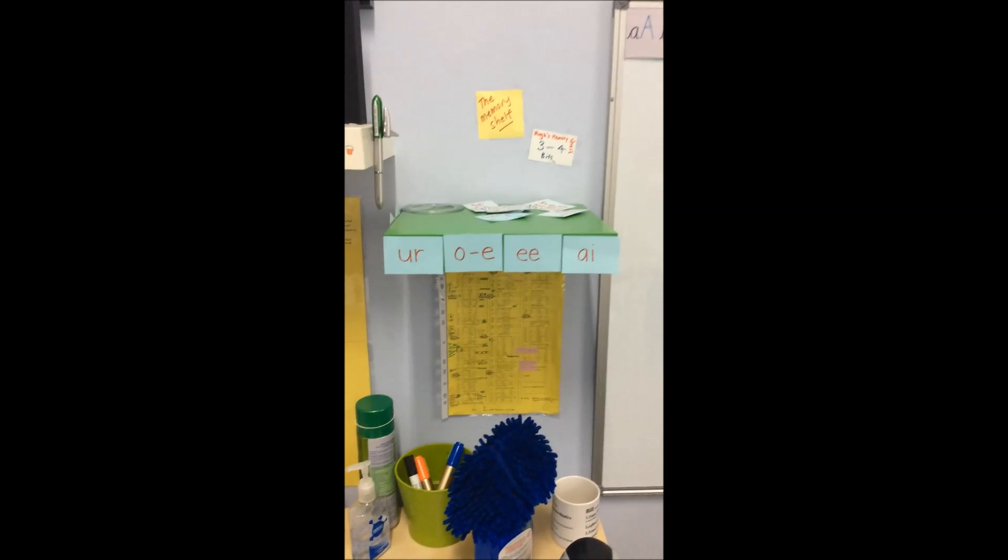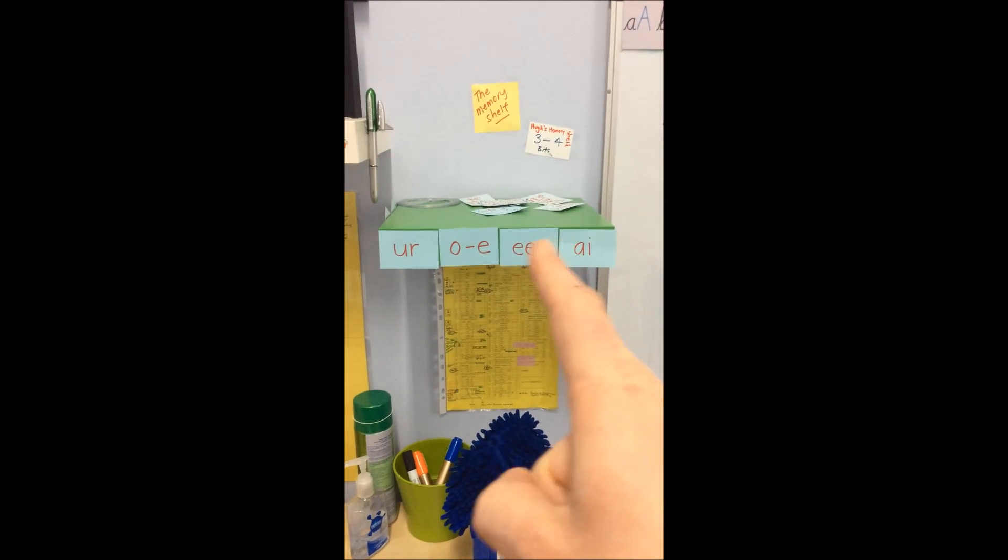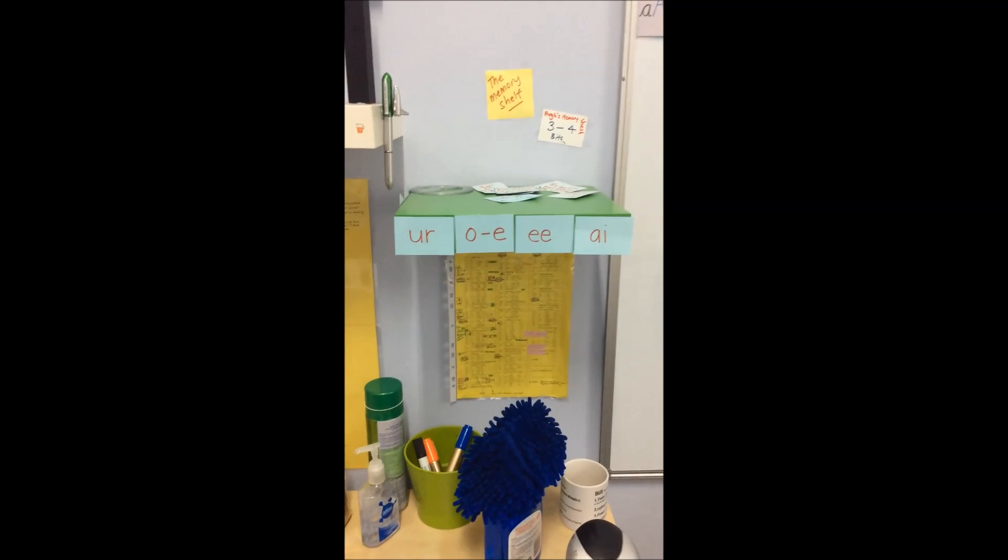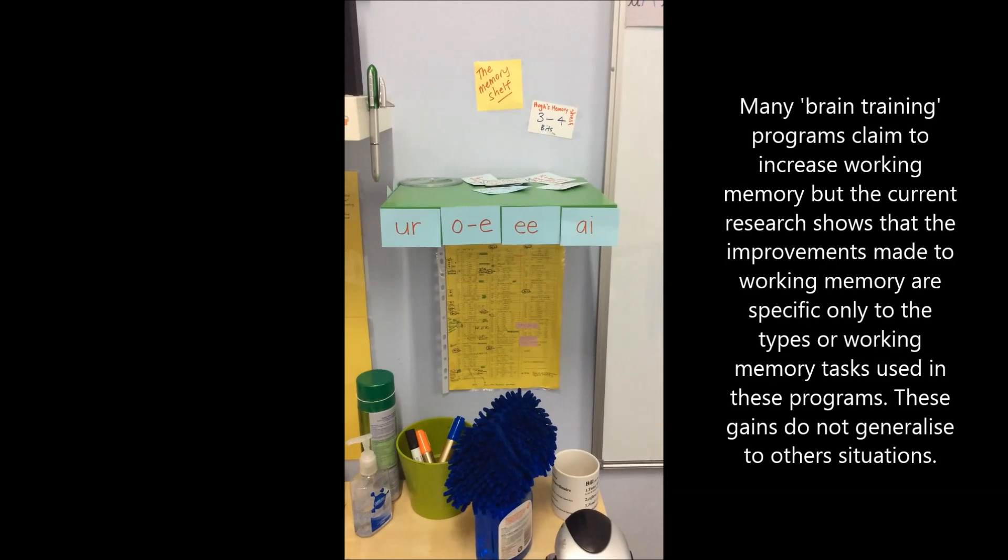So four spots on the memory shelf. As soon as we start to jam new things onto the memory shelf, things start to fall off because the memory shelf is only as big as the memory shelf is big. We can't make it any bigger.